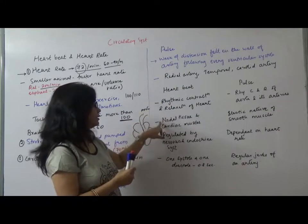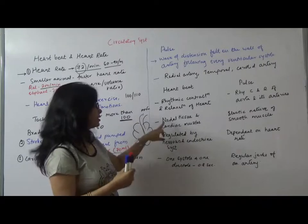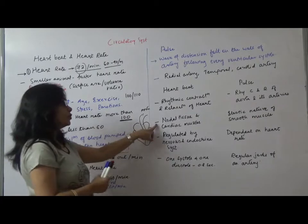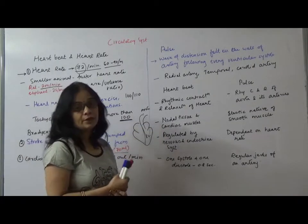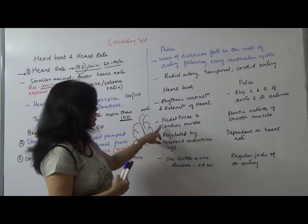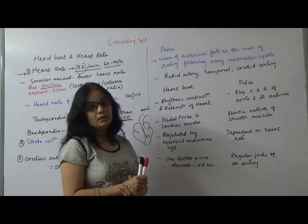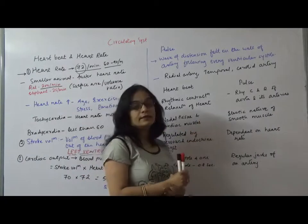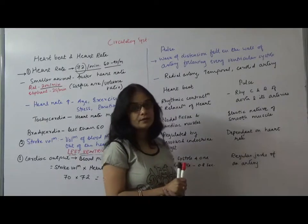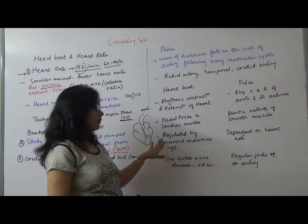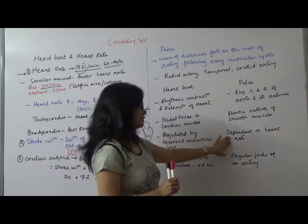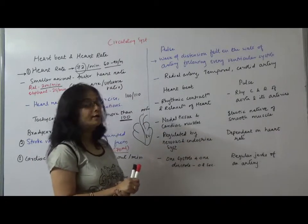Heartbeat is rhythmic contraction and relaxation of the heart. The four chambers' contraction-relaxation, systole-diastole mechanism, that is heartbeat. Pulse is rhythmic contraction and relaxation of aorta and arteries. Generally pulse can be felt in all arteries but we take superficial arteries like radial, temporal or carotid artery. Heartbeat involves special tissues - the conducting system with nodal tissues, sinoatrial node or atrioventricular node and cardiac muscles are responsible for heartbeat, whereas elastic nature of arteries gives pulse.